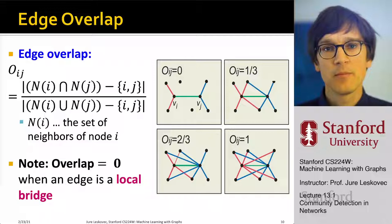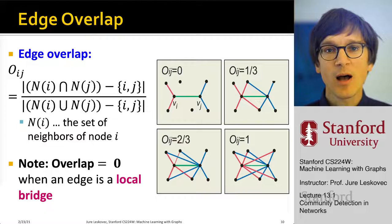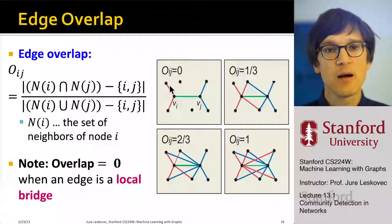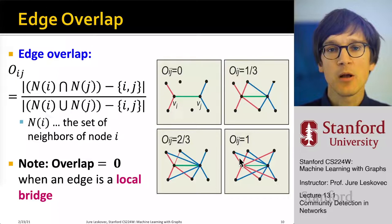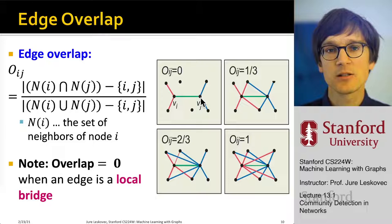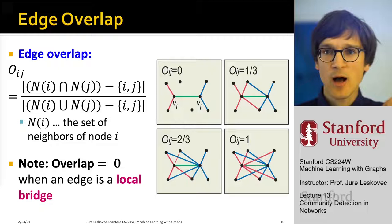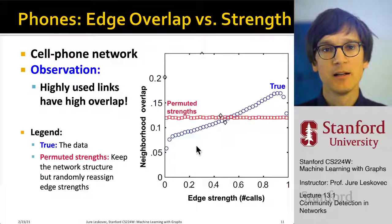This was operationalized using a metric called edge overlap — the fraction of neighbors that edge endpoints have in common. An edge with overlap 0 means nodes i and j have no friends in common, while an edge with overlap 1 means they are mutually connected to all the same neighbors. A high-overlap edge is structurally strong; a low-overlap edge is structurally weak. Granovetter's prediction was that low-overlap edges would have few phone calls, and high-overlap edges would have many.